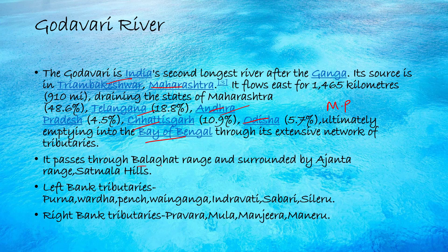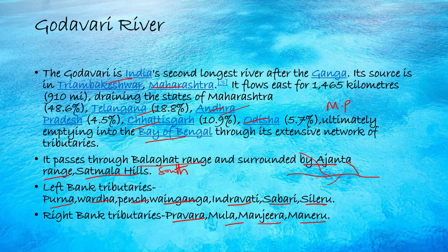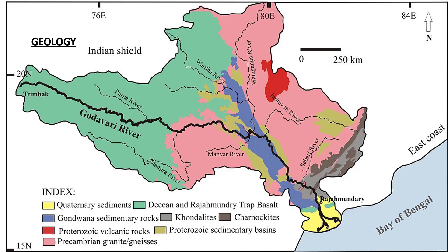The river passes through the Balaghat range on the northern side, with the Ajanta range also on the north. The left bank tributaries are Poorna, Varda, Pench, Wainganga, Indravati, Sabari, and Sileru. The right bank tributaries are Pravara, Mola, Manjira, and Maneru. The left and right bank designation depends on the flow direction of the river.